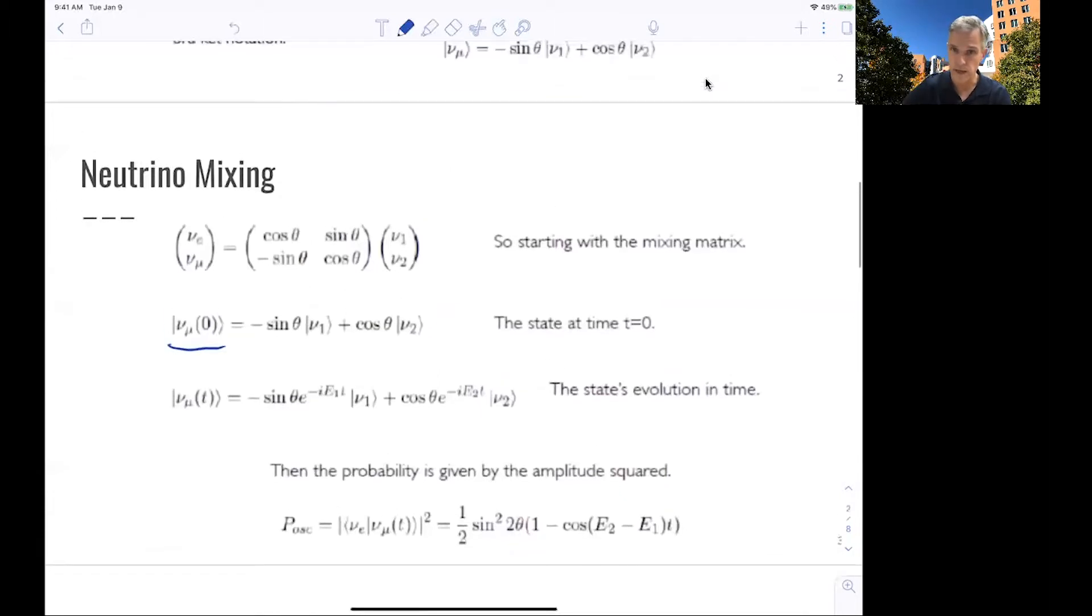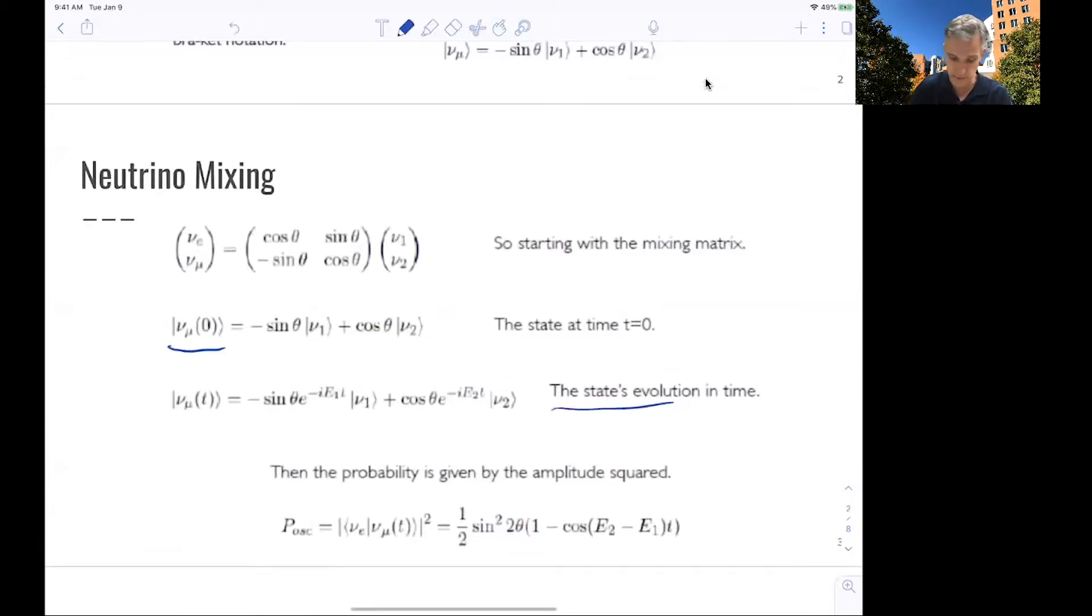So we see we find some time evolution. If we then ask ourselves, what is the probability that we start from a muon neutrino and actually find in an interaction an electron neutrino through this mixing of mass eigenstates? We can calculate this probability by squaring the amplitudes. If we do this, using this part here, we find that there is a cosine E₂ minus E₁ term.